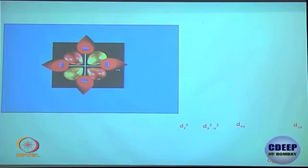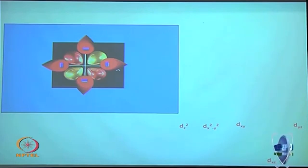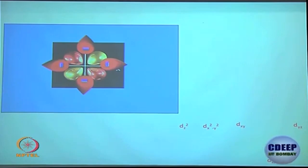Compared to the free metal ion, everything is destabilized because the free metal ion has no ligands and therefore no repulsion. The moment ligands arrive, repulsion starts and the system's energy goes up. Overall you have 2 orbitals going up and 3 going down, but the net stabilization with respect to the bary center for a completely filled d¹⁰ or high-spin d⁵ system should be zero.